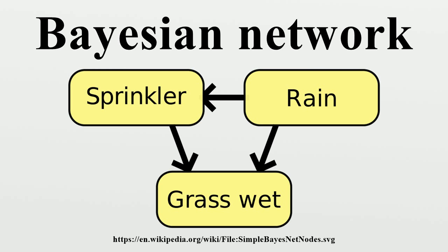D-separation: this definition can be made more general by defining the D-separation of two nodes, where D stands for directional. Let P be a trail from node U to V. Then P is said to be D-separated by a set of nodes Z if and only if one of the following holds: P contains a chain such that the middle node M is in Z; P contains a fork such that the middle node M is in Z; or P contains an inverted fork such that the middle node M is not in Z and no descendant of M is in Z. Thus U and V are said to be D-separated by Z if all trails between them are D-separated. If U and V are not D-separated, they are called D-connected. X is a Bayesian network with respect to G if for any two nodes U and V, where Z is a set which D-separates U and V.